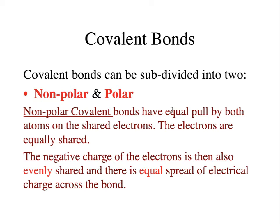In a polar covalent bond, one team is stronger than the other and pulls the flag more towards itself. This is akin to what happens when two atoms pull unevenly on a pair of electrons in a covalent bond. The atom that pulls with greater force has a more negative charge, because the electrons spend more time around that atom. The other partner has a slightly positive charge because it has lost control over those same electrons.